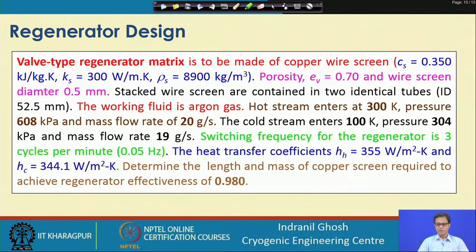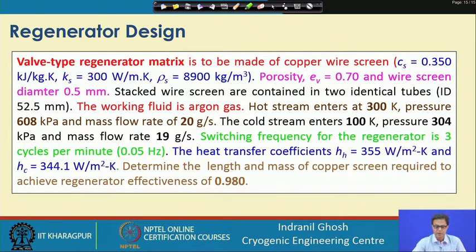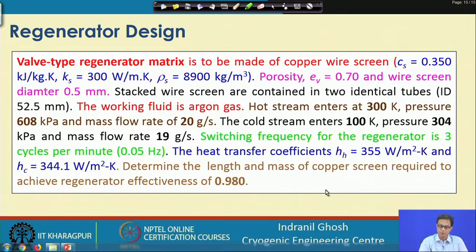What we are supposed to find out is the length and the mass of the copper screen required to achieve a regenerator effectiveness of 0.98 — that is, 98% effectiveness. These are the parameters given, and we will now look into the procedure before going to the solution.